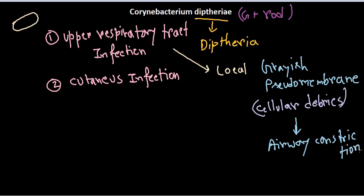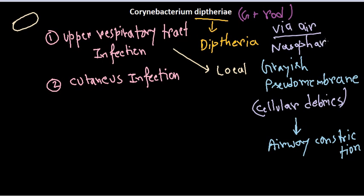Symptoms include airway constriction and swelling of the tonsillar area. Corynebacterium diphtheriae resides in the nasopharynx and can be spread via air. It kills cells in the nasopharynx, producing cellular debris that forms the gray pseudomembrane and can constrict the airway in some cases.